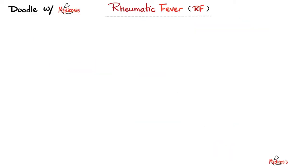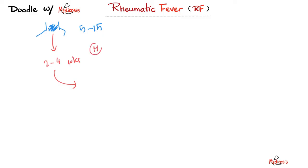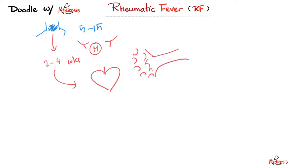Rheumatic fever — doodle with Medicosis. We have a child, usually between 5 years and 15 years old, who developed sore throat or pharyngitis. After this, we wait about 2 to 4 weeks. This kid did not receive antibiotics for the pharyngitis. After 2 to 4 weeks, an immunological reaction happens — we call it molecular mimicry. M protein, or matrix protein, belongs to group A beta-hemolytic streptococcus. My body was supposed to attack the M protein that belongs to the bacteria, but since the M protein looks very similar to proteins in my heart and to proteins on my neurons, my immune system started attacking my own heart and my own neurons.